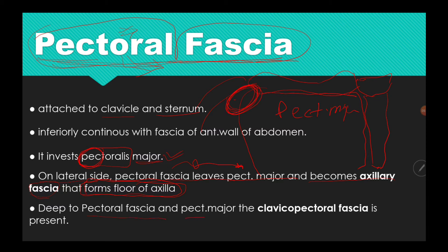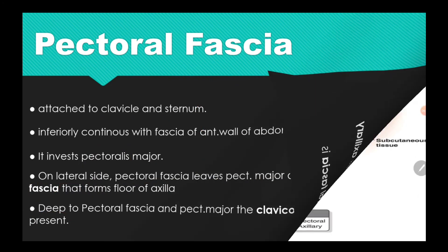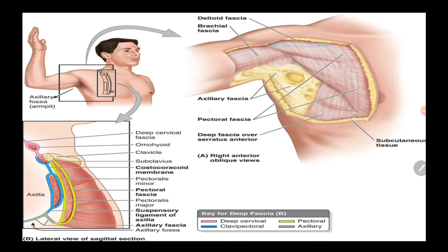Deep to the pectoral fascia and pectoralis major, another fascia is present — the clavipectoral fascia — which covers the pectoralis minor. We can see in the image that the pectoral fascia on its lateral side becomes axillary fascia forming the floor of the axilla, and above it the deltoid fascia is present.